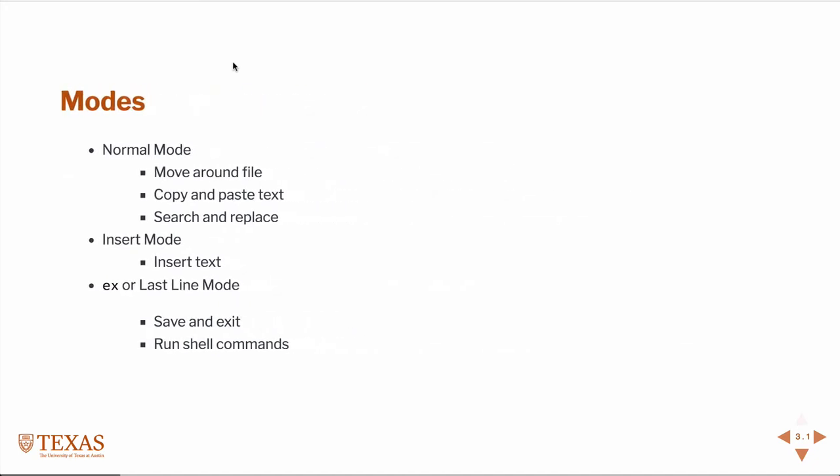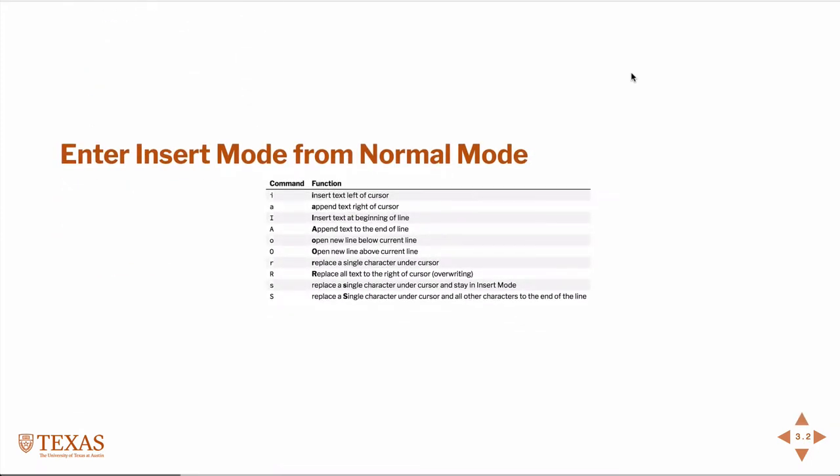The one major difference between vim and other editors is that you don't typically just open a file and start typing text - there are several different modes. Insert mode is the mode where you actually insert text. When you're moving around, searching for something to edit, or searching for keywords to replace, you'll do this in normal mode, where you can't directly change the text. It's a little awkward at first but once you've mastered it, it's amazing. There's also ex mode or last-line mode where you save the file or even run shell scripts.